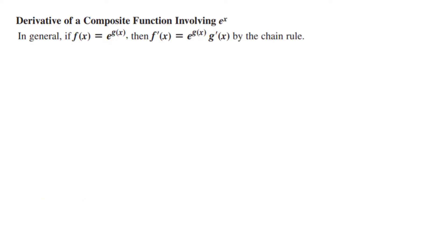However, if we have a function g(x) in the place of x — so it's e to the power of g(x) — then the derivative formula changes. For composite functions involving e to the power of x, we keep it the same and then take the derivative of g(x), bringing that down to be multiplied by e to the power of g(x). So if you have e to the power of g(x), keep this the same and then multiply by the derivative of g(x).